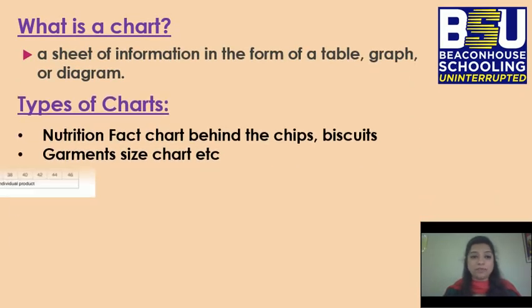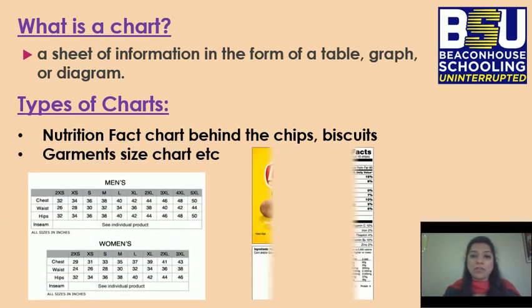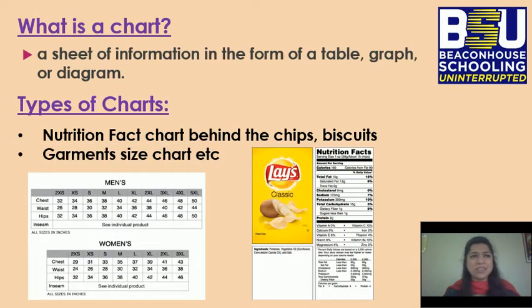What is a chart? A chart of information in the form of table, graph or a diagram. You can see so many different types of charts in your daily life. For example, one is your garments chart, in which you will have your sizes chart. The other chart that I've given as an example is the nutrition facts chart that you can see behind your snacks, behind your bottles, behind your dairy products, behind your biscuits, everywhere. These are the charts.